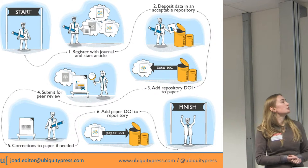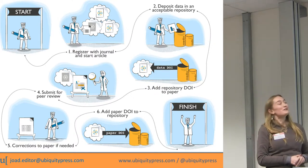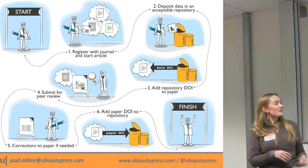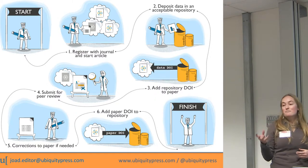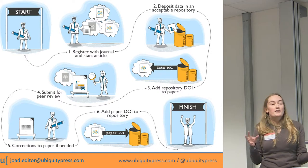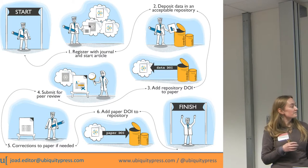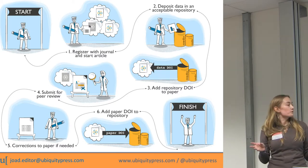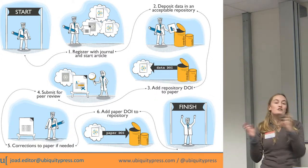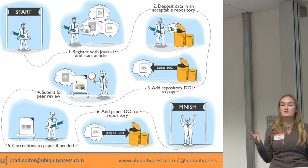It's very quick and easy to do — this actually makes it look almost more complicated than it is. All you have to do is register, put your data in a repository, then you'll get a number — a citable reference for that data — which you can add to your paper. You write your paper, submit it, and we'll help you with all of that. Then you add the paper's DOI to the repository. You have two ways that people can cite you: through the data paper, and also by directly citing the data in the repository.